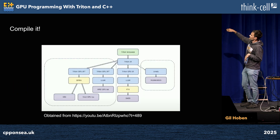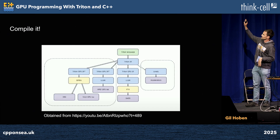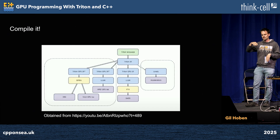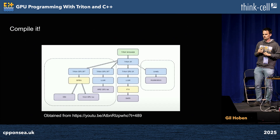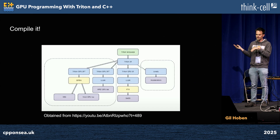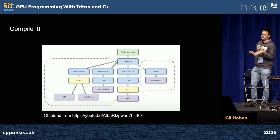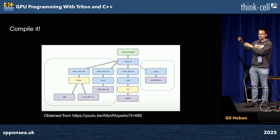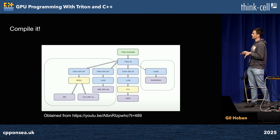All of this gets compiled in the back end. The Triton language has a tight intermediate representation, there's an MLIR pipeline — an LLVM framework for representing intermediate representations for domain-specific applications — which gets lowered down to LLVM IR. Then using a PTX format, it gets compiled into a CUDA binary for your GPU compute target.